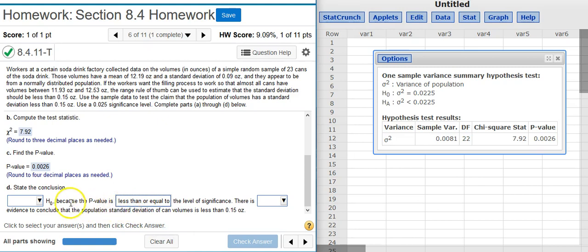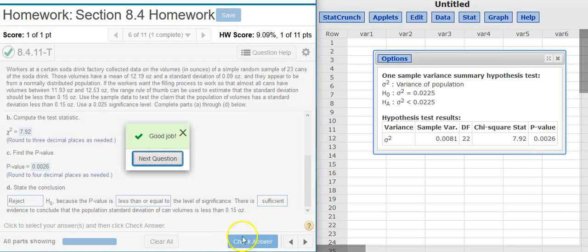And that means that we're inside the region of rejection. When you're inside the region of rejection, you reject the null hypothesis. And every time we reject the null hypothesis, there's always sufficient evidence. Good job!